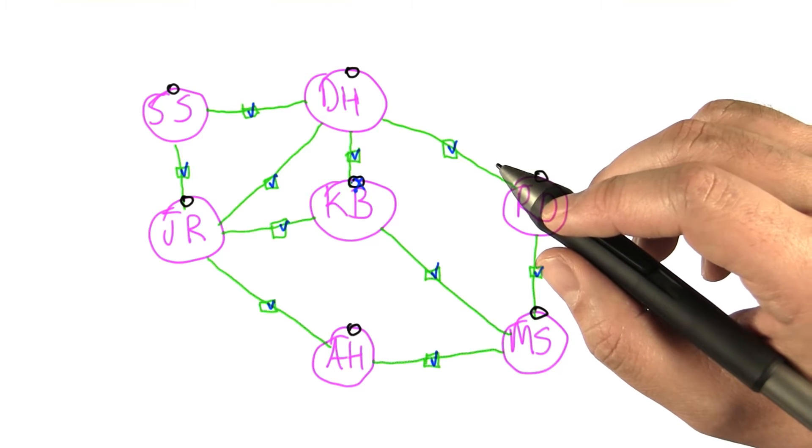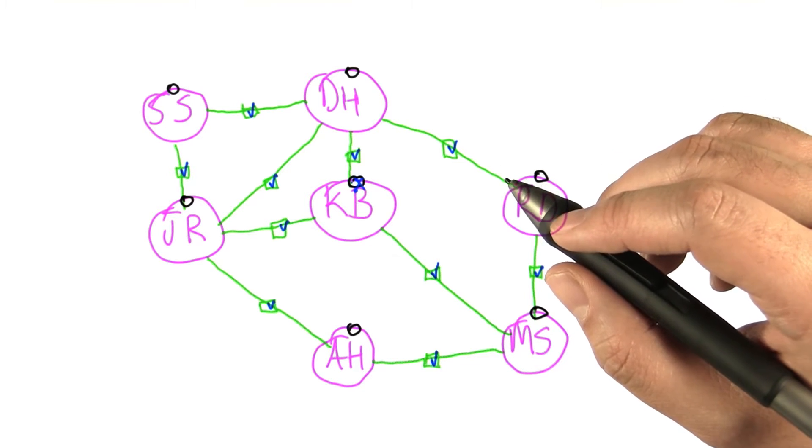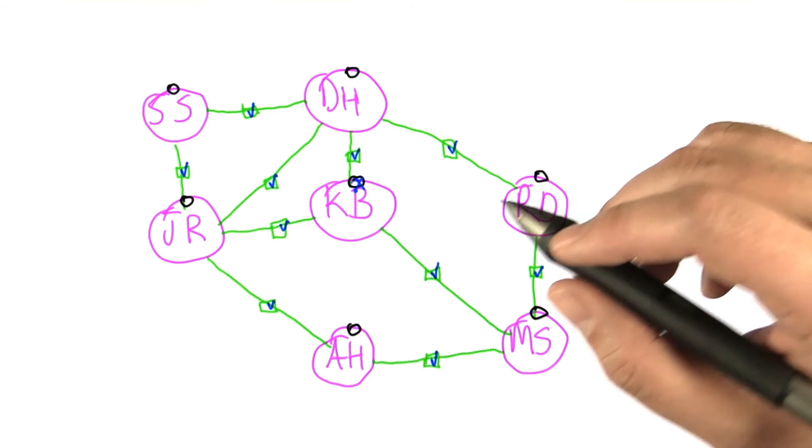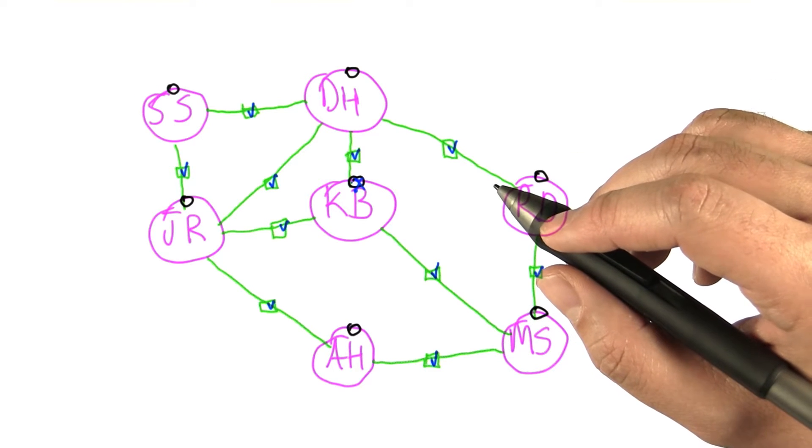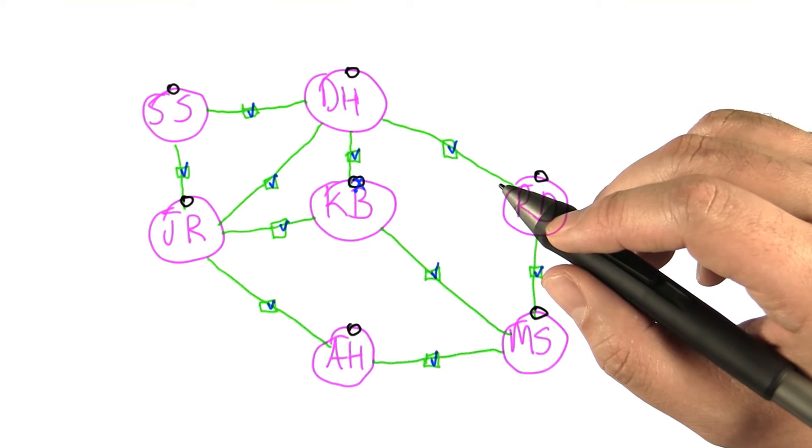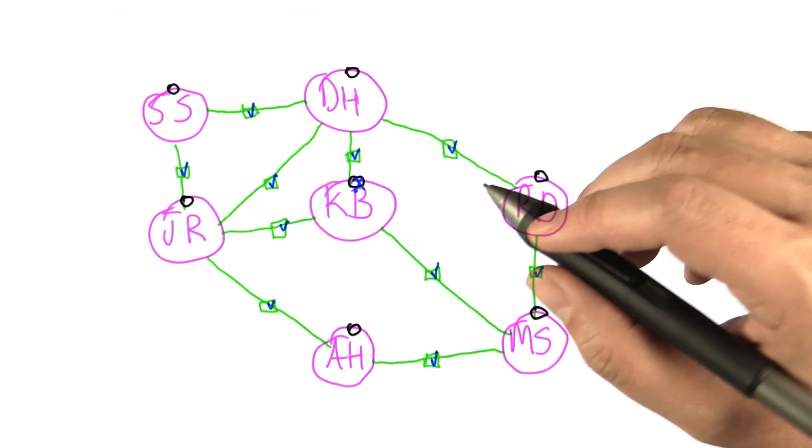Now this example illustrates two things that are central to this course. The first is the idea of a social network. We often think of social networks as being particular websites that exist these days, but really what a social network is is connections between individuals that capture relationships between them.